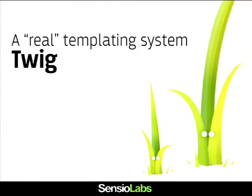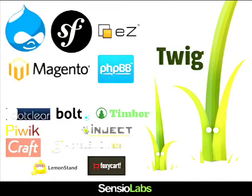Another game changer for me is Twig. I call it a real templating system because I think PHP is not a very good PHP templating system. Nowadays there are so many other projects using or switching to Twig that if you learn Twig, you will be able to use this knowledge with many other different projects — even projects not written in PHP, because the syntax itself is shared with libraries in Ruby and Python. The syntax is becoming a standard, really.